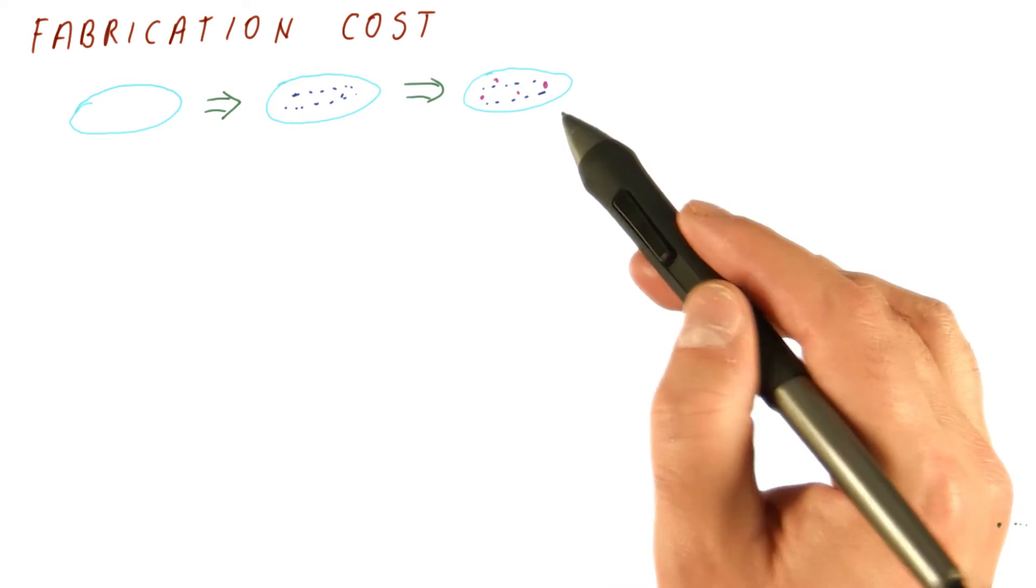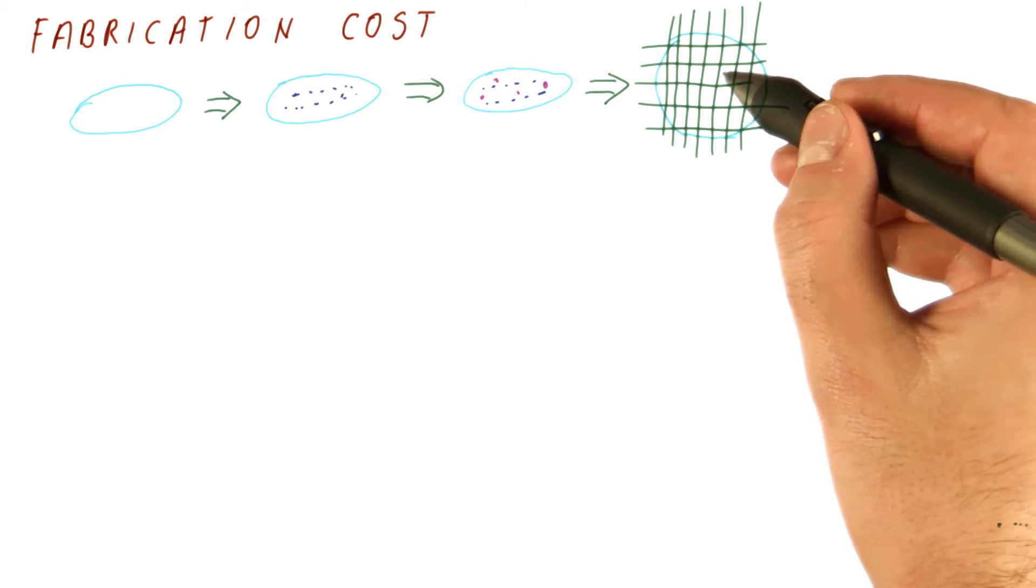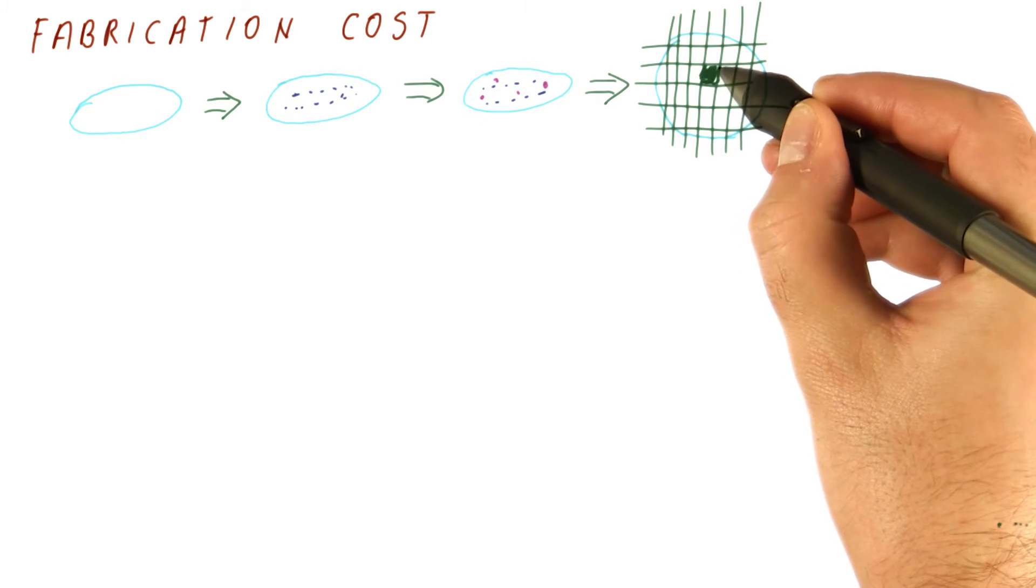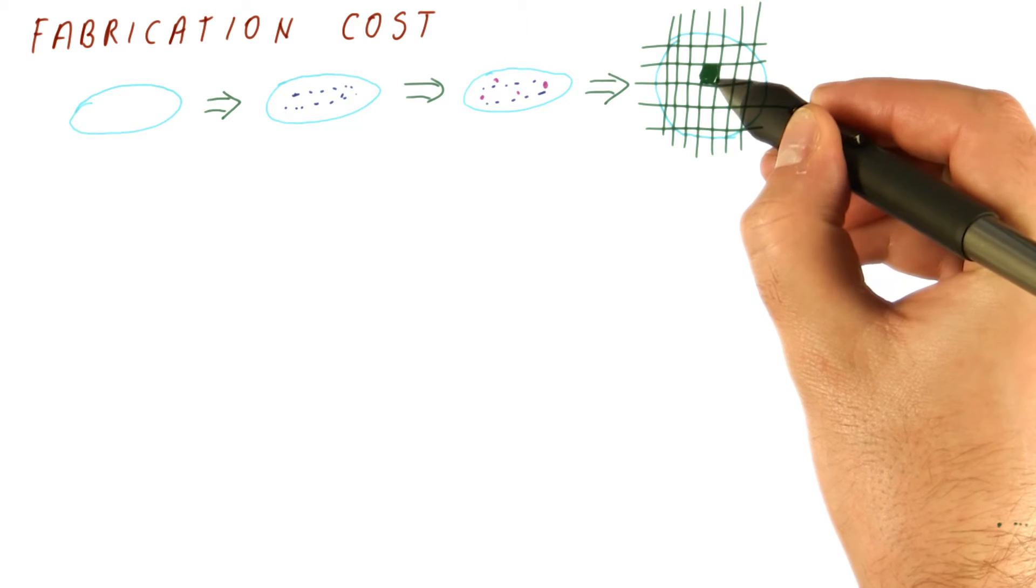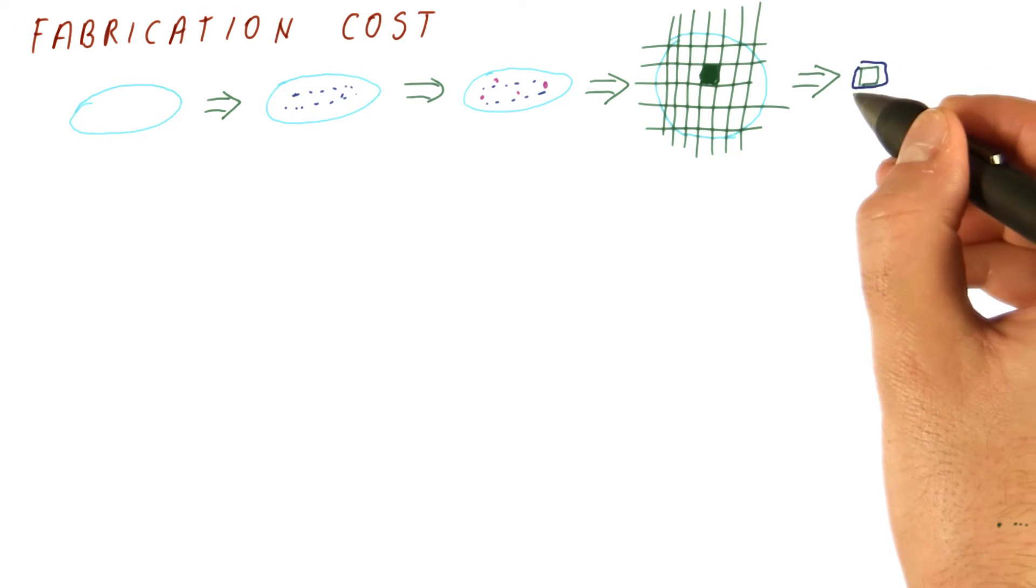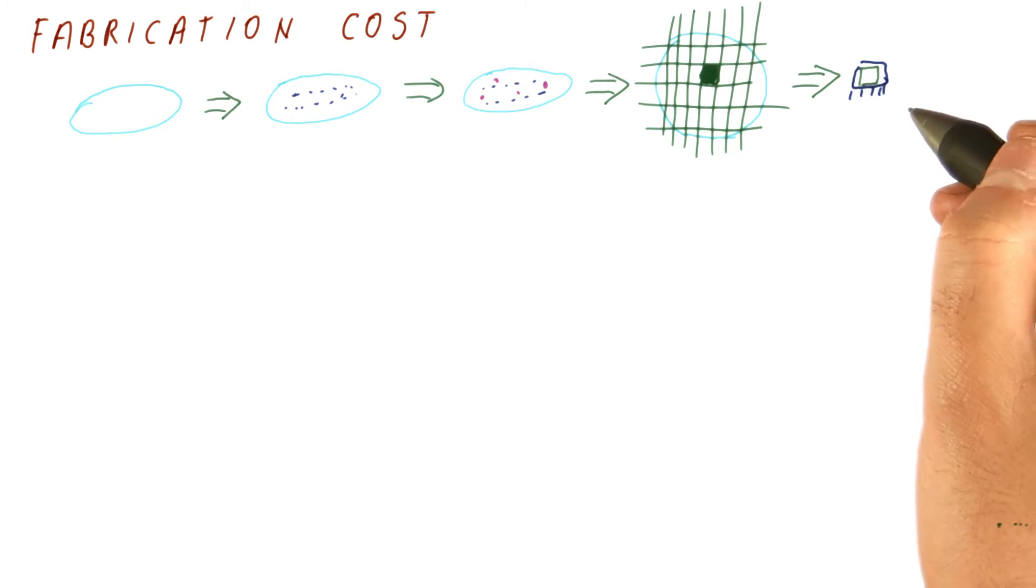And there are a number of these steps. At the end of these steps, we take the wafer and we cut it up. Each one of these small squarish things is going to be a chip. So this is a single chip. We take each chip and we put it in a package that has pins on it. So this is what you normally see as a chip. And then we test these chips.